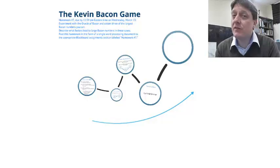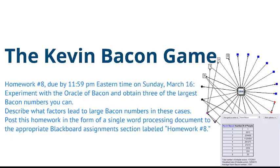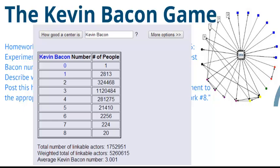I want you to play the Kevin Bacon game. You may have heard of it before, or you might not have. I want you to experiment with the Oracle of Bacon and obtain three of the largest Bacon numbers that you can. I want you to describe what factors lead to those large Bacon numbers — what patterns in social networks explain them, which ones we've talked about. Why are some people in the Kevin Bacon network close to one another? Why are others distant? I want you to think originally about that. There's no pat answer. Post your homework as a word processing document on our Blackboard page.